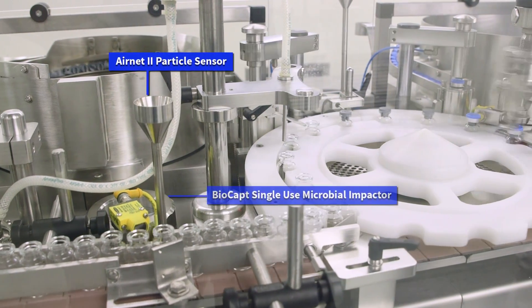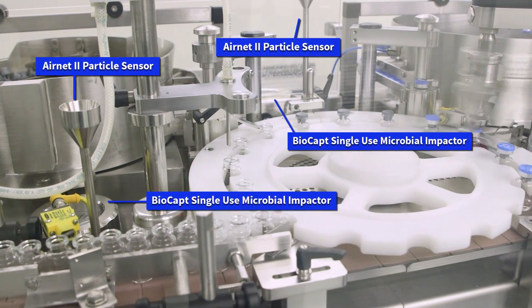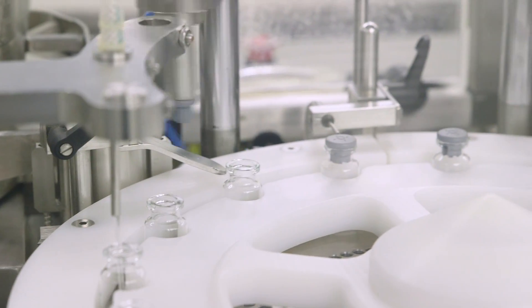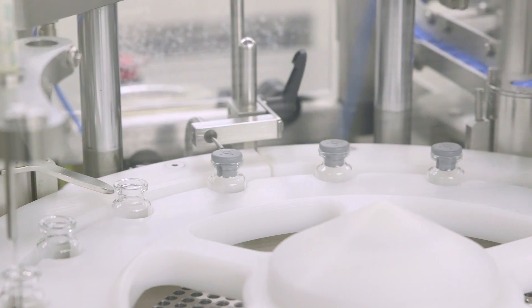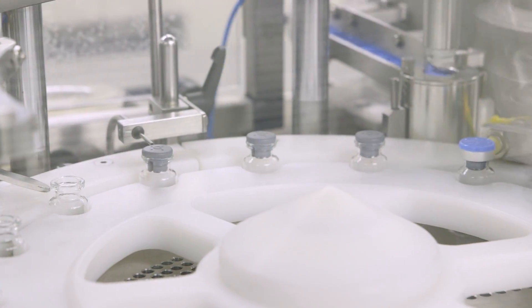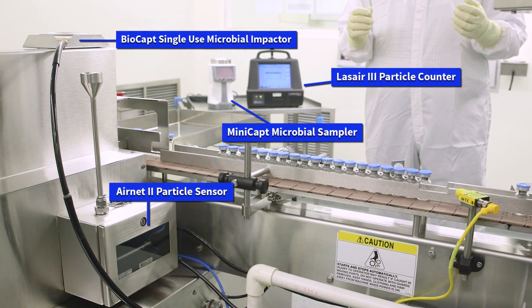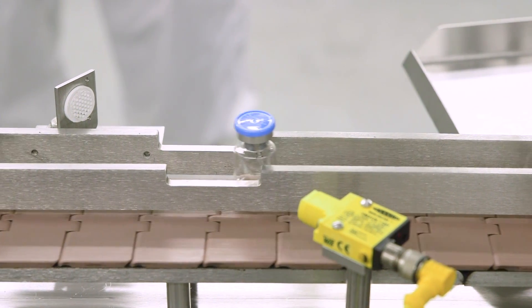One of the most critical areas to monitor is where the vial is filled with the product. Monitoring the filling process continues through the stoppering and capping steps. Once the vials are capped, they are conveyed to a collection area where monitoring continues.